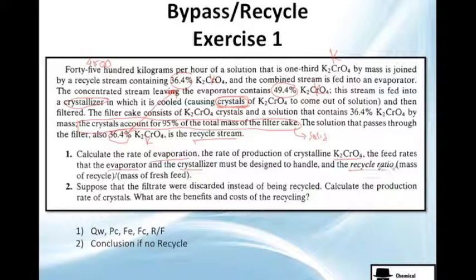Now, we're going to calculate the rate of evaporation, the rate of production of K solid, the feed rates of the evaporator and crystallizer. We need the recycle ratio, which is exactly the mass of recycle divided by the mass of fresh feed. And suppose there was no recycling. We're going to see what happens when we do not recycle.